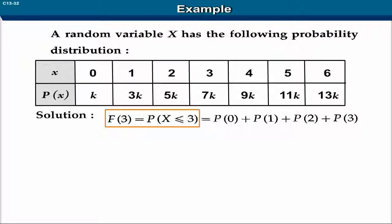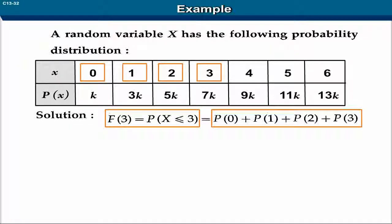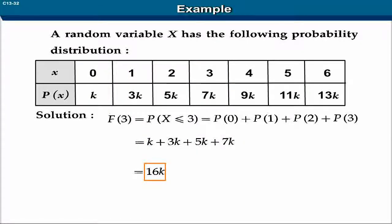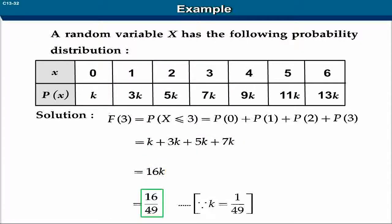F(3) is equal to P(X ≤ 3) is equal to P(0) plus P(1) plus P(2) plus P(3), which is equal to k plus 3k plus 5k plus 7k, equal to 16k, which is equal to 16 upon 49.